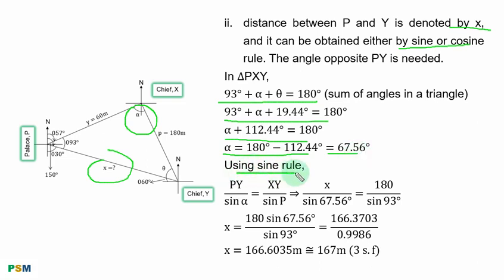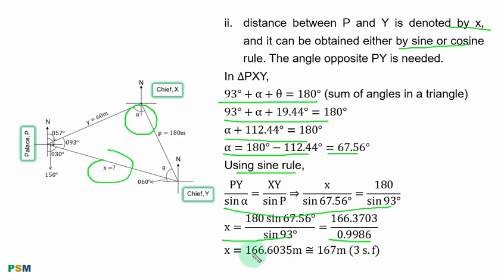Using the sine rule: PY over sine alpha equals SY over sine P. Replacing the sides with their values and making PY the subject, after simplification and division, the distance between P and Y to 3 significant figures is approximately 167 meters.